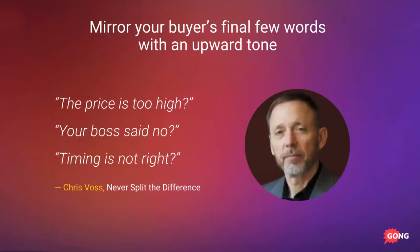For example, if a buyer has a pricing objection and says 'your price is just too high,' you simply respond with 'the price is too high?' and then pause and let them do the job of further explaining. The key is you have to pause — if you mirror the buyer with an upward tone and don't pause, they won't fill that void. You have to almost uncomfortably pause, count to three seconds, and let the buyer voice further concerns.